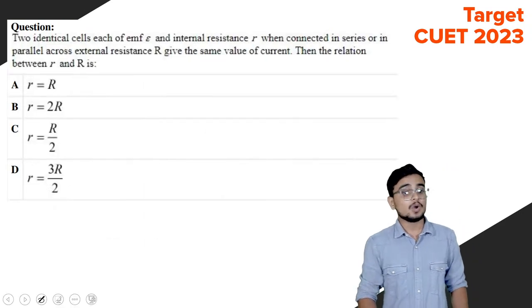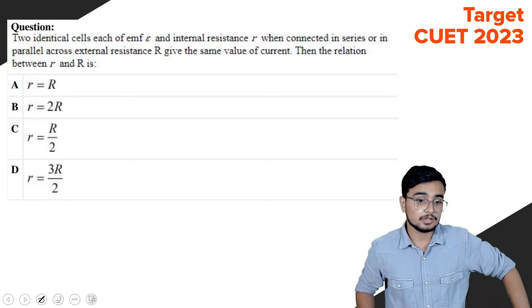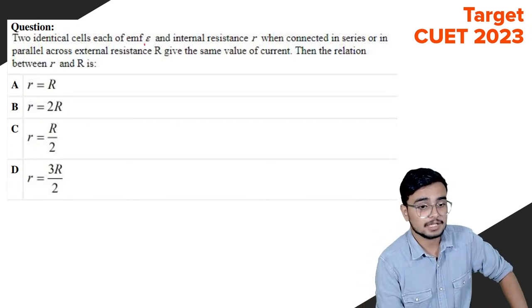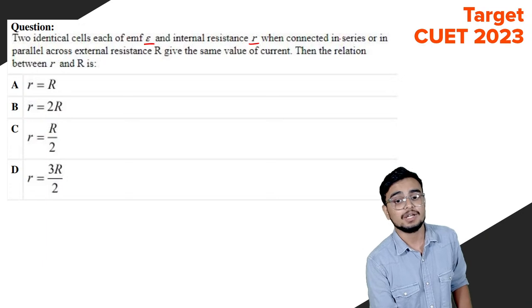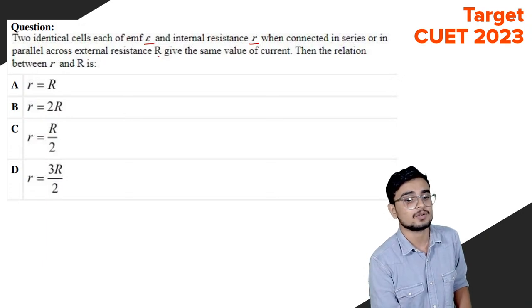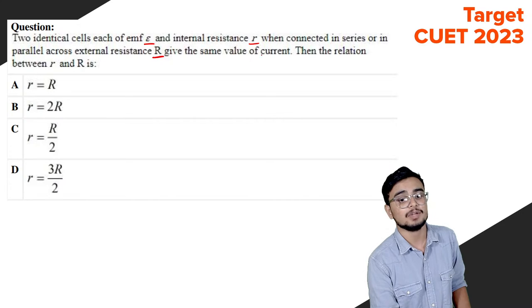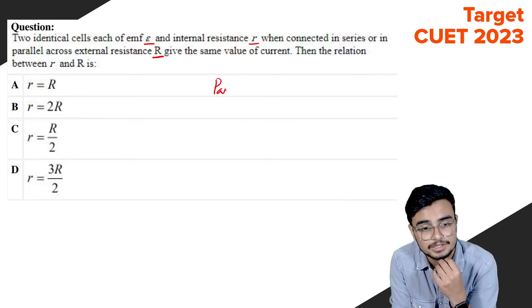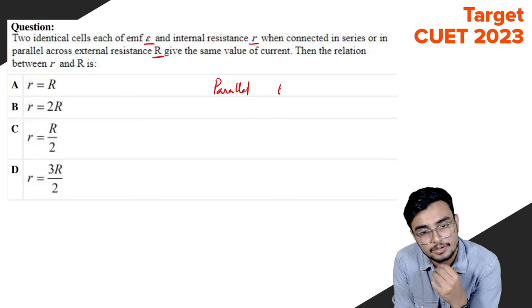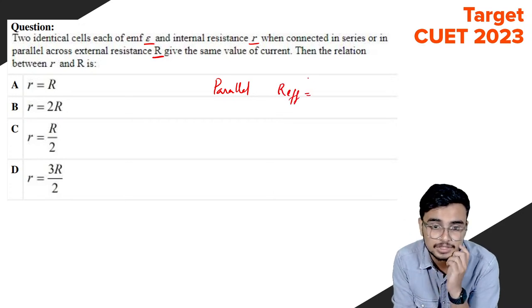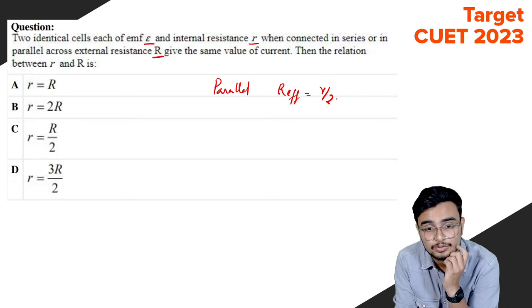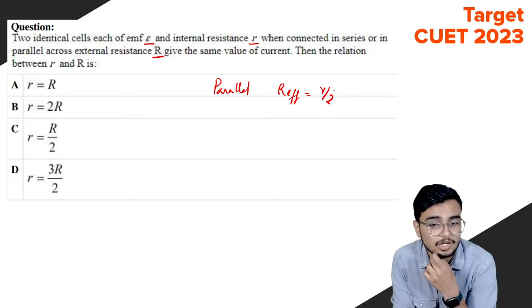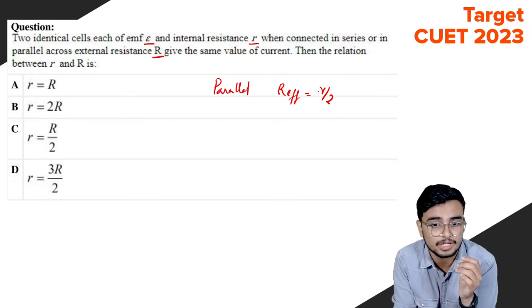Two identical cells, each of EMF E and internal resistance r, are connected in series and parallel across the same external resistance R, and give the same value of current. We need to find the relation between R and r. Let's look at the parallel connection with effective internal resistance r by 2.